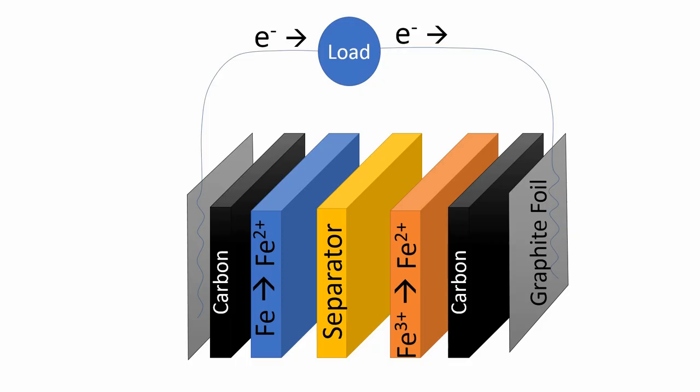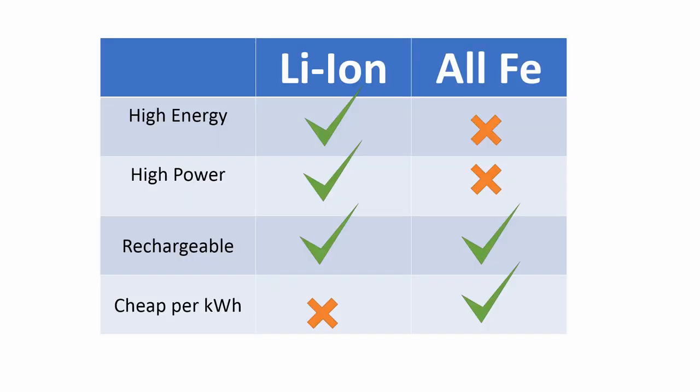So here's a diagram of the basic iron battery. You have carbon and iron on one side, you have carbon and iron 3 on the other side, and as electrons pass out of carbon, they pass into the iron 3 through that conductive carbon, and you get electricity through your load. This has some advantages over lithium-ion batteries in that it is cheap per kilowatt hour, but it also has some serious disadvantages. It's not at all high energy or high power.